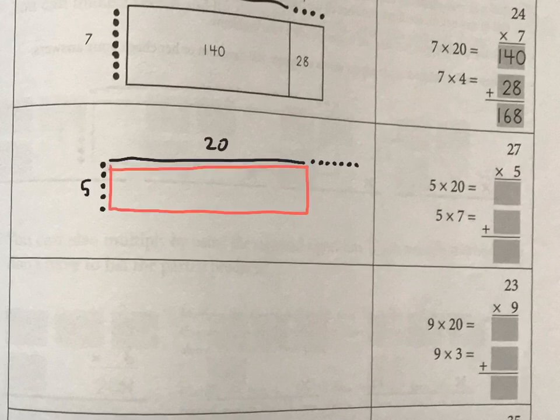There is my sketch. I have 5 times 20. And again, just write it so that you can line things up neatly. And then, oh, I forgot to put my 7 there. Then I have 5 times 7, and then I add them together for the final answer.